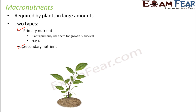Since plants absorb primary nutrients from the soil first, the soil starts missing these nutrients early on. Whatever nitrogen, phosphorus, or potassium is present in the soil is quickly absorbed by the plant in the beginning. Therefore, the soil is often deficient in these minerals.